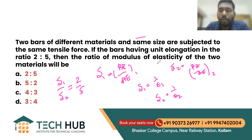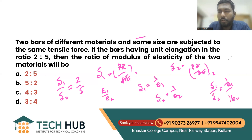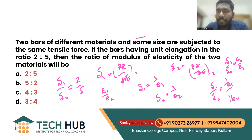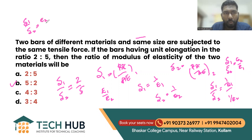We need to find E1 divided by E2. Delta 1 divided by delta 2 equals (1/E1) divided by (1/E2), which gives delta 1 by delta 2 equals E2 divided by E1. Substituting, delta 1 divided by delta 2 equals E2 divided by E1, so E1 divided by E2 equals 5 by 2.